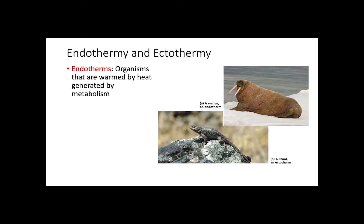One temperature-related classification for animals corresponds to where animals obtain heat from. Animals can be endotherms or ectotherms. Endotherms are warmed by heat produced via metabolic activity, meaning these animals produce their own heat — most mammals and birds fall into this category. On the other hand, ectotherms obtain heat from external sources like the sun; fish and reptiles are often classified as ectotherms.